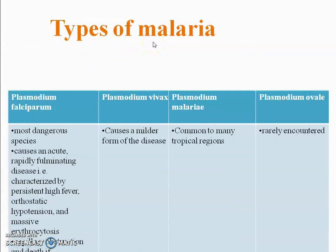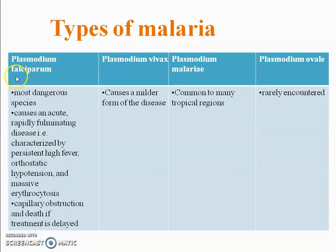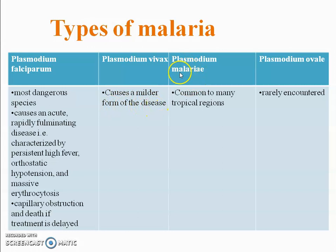Malaria is characterized by chills, high fever, anemia, and sweating. Regarding types of malaria: Plasmodium falciparum is the most dangerous species and causes an acute, rapidly fulminating disease characterized by persistent high fever, orthostatic hypotension, massive erythrocytosis, capillary obstruction, and death if treatment is delayed. Plasmodium vivax causes a minor form of the disease. Plasmodium malariae is common to most tropical regions, and Plasmodium ovale is rarely encountered.